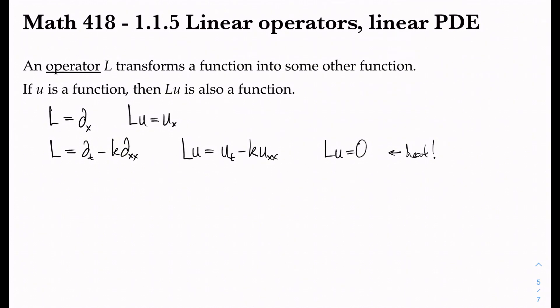We say that L is a linear operator if and only if two things have to be true. First, if we apply it to a sum of functions, then this is the same thing as L applied to u plus L applied to v. And the other thing is that whenever there's a scalar or constant, then when we apply it to the constant multiple, that's the same thing